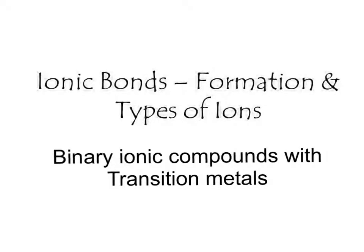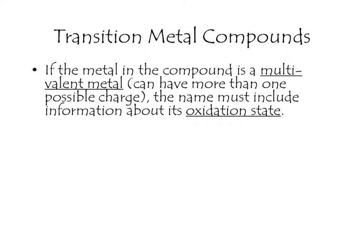This tutorial is about binary ionic compounds with transition metals. If you recall from the tutorial about ion formation, transition metals are multivalent, meaning they can have more than one possible charge. So when you write the name, you have to make sure the oxidation state is given.